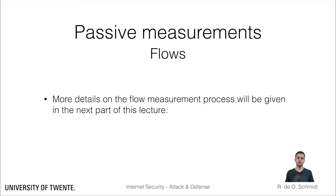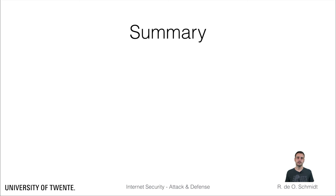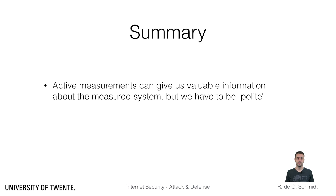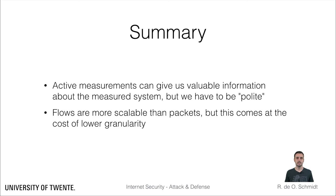In the next part of this lecture, you will learn specifics of the components involved in the flow measurement process, and how they work together from the moment of observing a packet to storing the data in a flow collector. In this lecture, we learned that there is not a single best approach for Internet measurement. Active and passive approaches have their respective pros and cons, and many times they complement each other. Active measurements can provide a good view of the measured system, but depending on the target and goal, may demand large infrastructures, and we must be careful not to disturb others. For passive measurements, packets provide a complete view of what goes on in the network, but packet capturing can become very expensive or even impossible at current high-speed links. Flows are a scalable alternative that comes at the cost of coarser data, which must somehow be compensated or corrected.